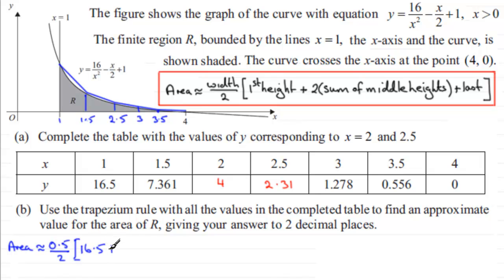Then we add twice the sum of all the middle heights. Okay, that's the 7.361 plus the 4 plus 2.31 plus 1.278 plus the 0.556. So that's twice the sum then of all the middle heights.